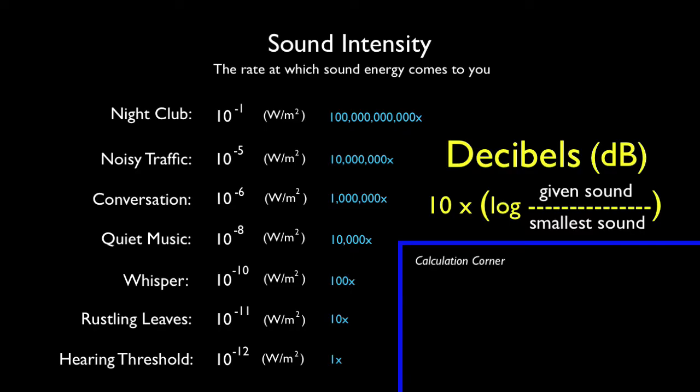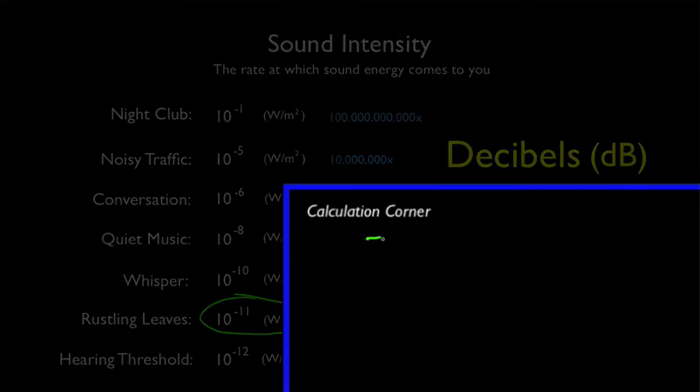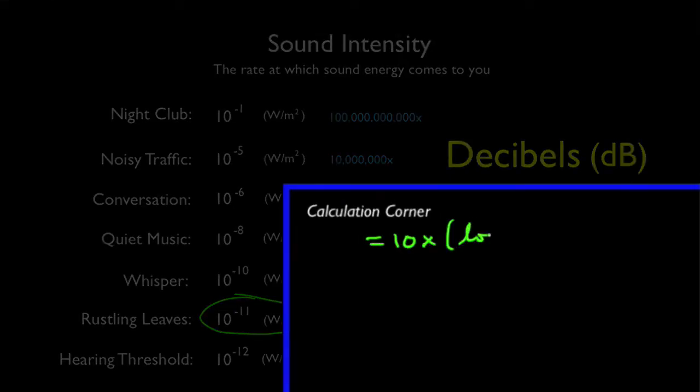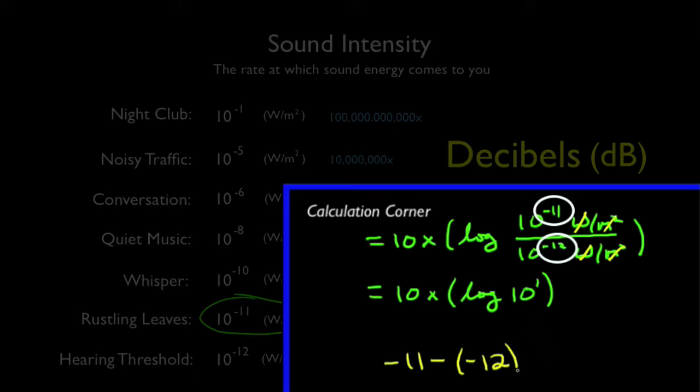Let's do an example. The rustle of leaves has a sound intensity of 10 to the minus 11th watts per square meter. Take this and divide it by the smallest sound we can hear, which is 10 to the minus 12th watts per square meter. And you get 10 to the first. Recall that when you divide numbers with exponents, you just subtract the exponents to get the answer.